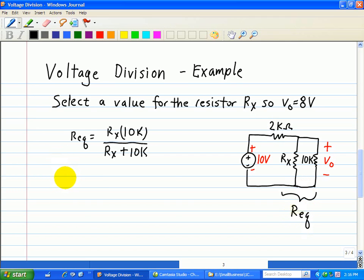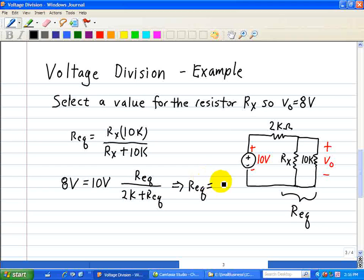Here our output voltage is 8 volts. Our input voltage is 10 volts. And we divide this 10 volts as follows where we have R equivalent divided by the sum of 2k plus Req. Doing some algebra with this equation yields that the R equivalent turns out to be 8 kilo ohms.